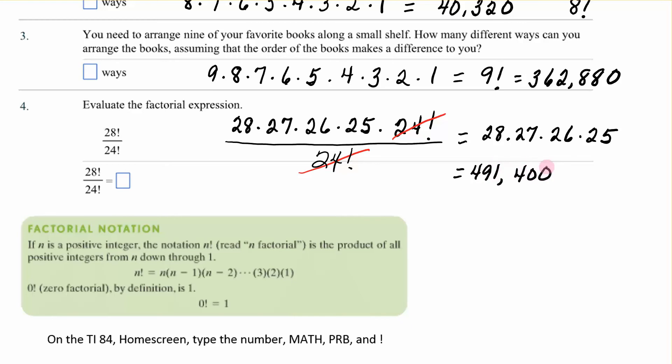So if I went to my calculator, I have 28 times 27 times 26 times 25, and that gives me 491,400.